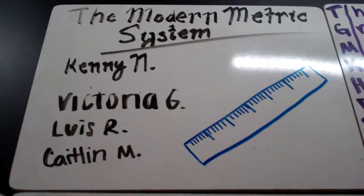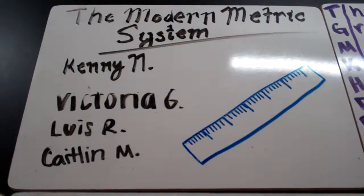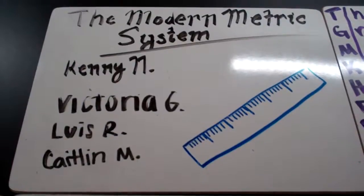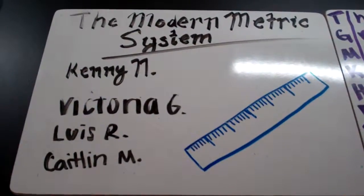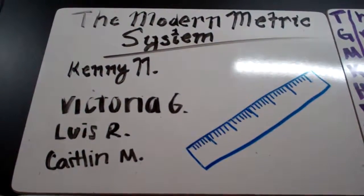We're going to give you some ways to remember the prefixes in the metric system. In our group we have Kenny, Victoria, Luis, and me, Caitlin.